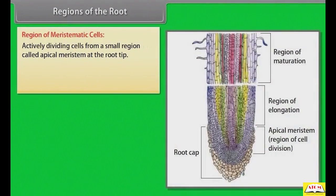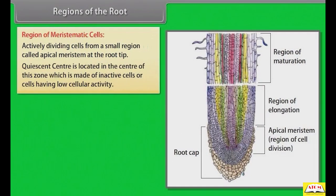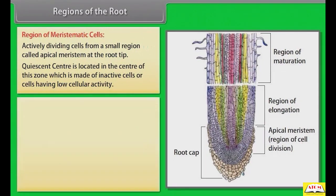Actively dividing cells form a small region called apical meristem at the root tip. The quiescent center is located in the center of this zone, which is made of inactive cells or cells having low cellular activity. The apical meristem of the root tip consists of three zones: Dematogen, Periblem, and Plerome.